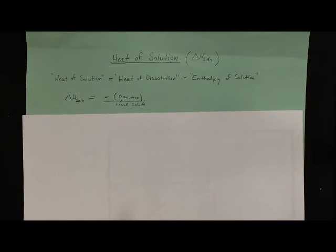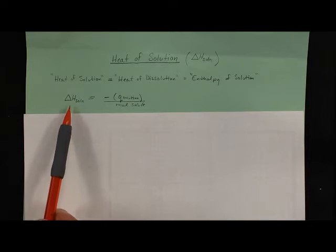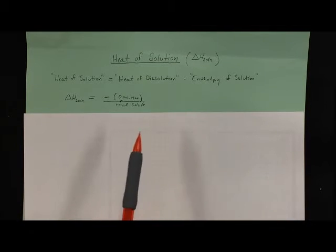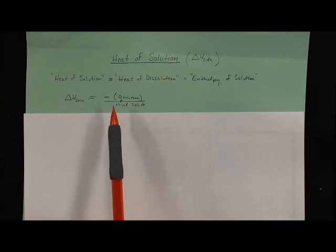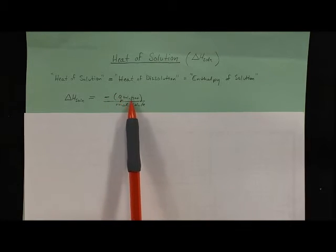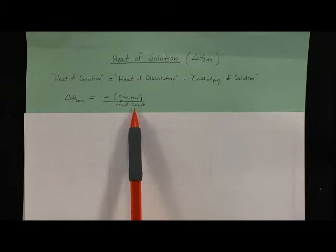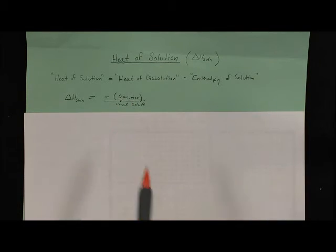In any case, the equation for the enthalpy of solution or heat of solution is simply the negative of the heat change to the solution divided by the moles of solute, because typically your units for heat of solution or enthalpy of solution is kilojoules per mole, or just joules per mole, but more typically kilojoules per mole.